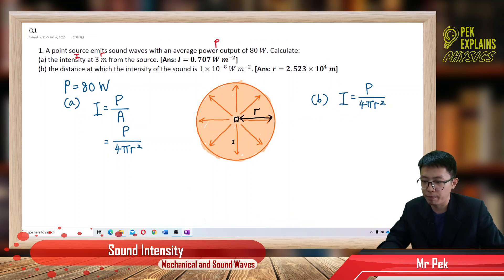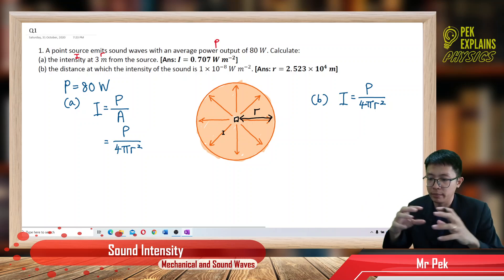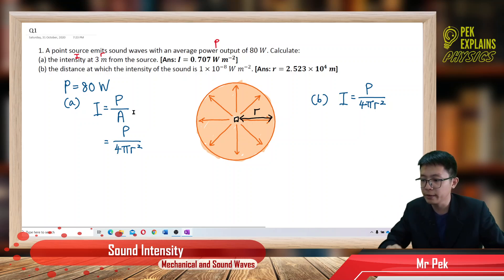We always know that sound waves travel in all directions, distributed to a sphere area. So intensity is power over area. Area is a sphere, so it's 4πR².